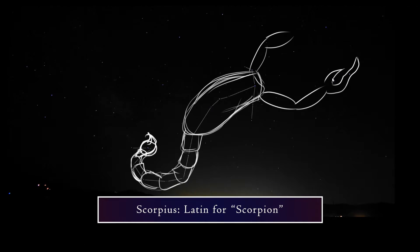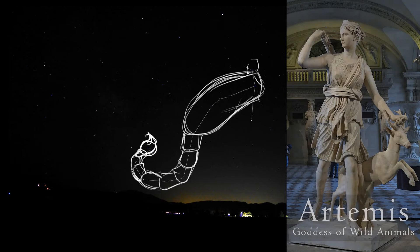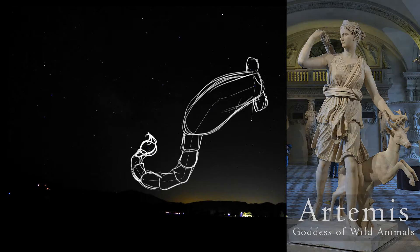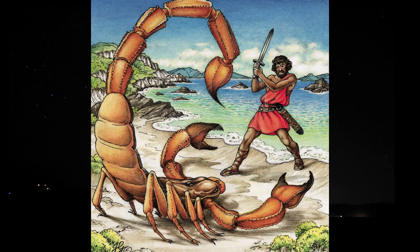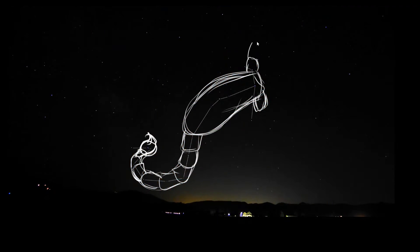Scorpius is the Latin word for scorpion. There is more than one myth associated with it, but it's often connected with Orion. One story describes how Artemis, the goddess of the wild animals, sent a scorpion to kill Orion after he boasted that he could kill every animal on Earth. Orion and the scorpion became mortal enemies, and Zeus banished them to the stars. Now they occupy opposite ends of the sky.